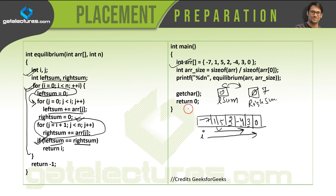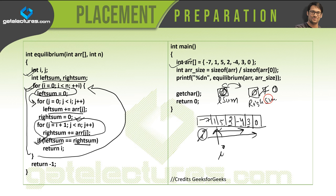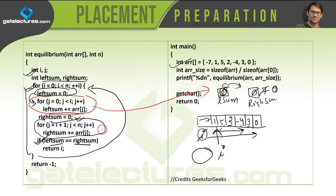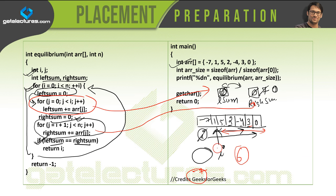If the two sums are equal, we return the index location i. If not equal, we increment i and move to the next position. Left sum and right sum are reinitialized to 0. For example, at the next position, the left sum becomes minus 7, and the right sum is 5 plus 2 plus 3 minus 4 plus 0 equals 6. Since minus 7 is not equal to 6, this will not match, so we increment i again and continue the loop.